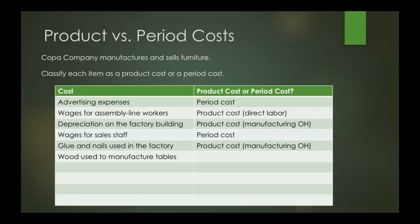Now, wood used to manufacture tables. Once again, part of the manufacturing process, so we know it's a product cost — but this is going to be direct materials. What makes this different from the glue and nails? Well, the wood we can track directly to the piece of furniture being manufactured. The glue or the nail — think of those as smaller pieces used in the manufacturing process that aren't being tracked to a specific piece of furniture.